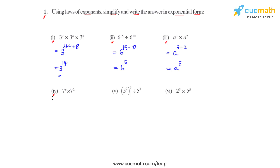The fourth bit also uses the product law of exponents. We keep the same base, which is 7, and add the powers: x plus 2. So this is the answer for the fourth bit.